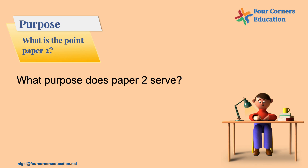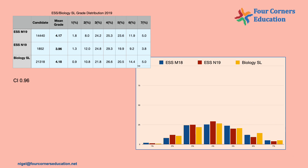Paper 2 causes quite a few problems for educators, obviously. There are a lot of questions about it. To think about that, let's first consider where we sit in terms of Environmental Systems compared to Biology. If we compare the distribution of grades from Biology compared to ESS, and in particular SL Biology, there's not a massive difference in the grade distribution.